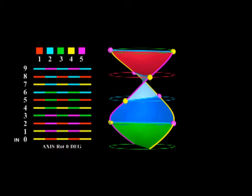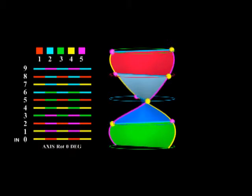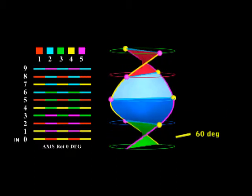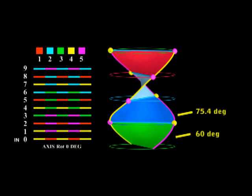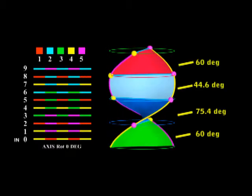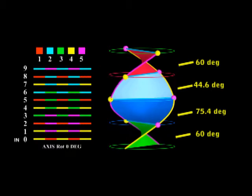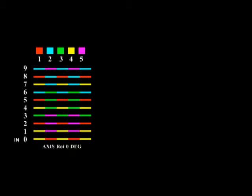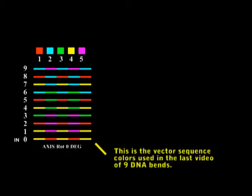I showed in my last video that A, B, and Z DNA seemed to split into just 4 sections. It was found by using the green 60 to start, and then the 75.4, the cyan at 44.6, and ending up with the red. Everything seemed to work out okay. On the left, you can see 10 vectors running from 0 to 9. These are the colored vectors used in the 9 bends in my last video.